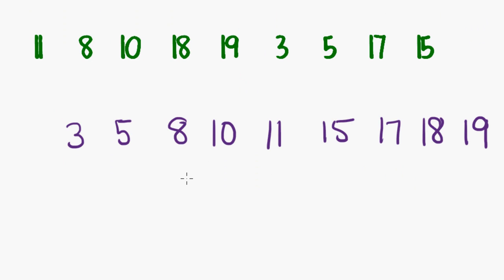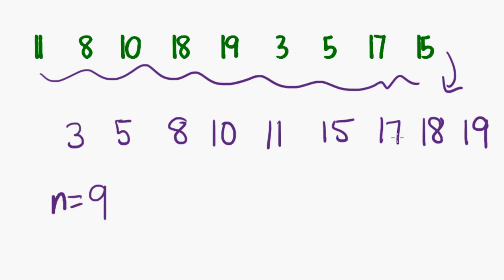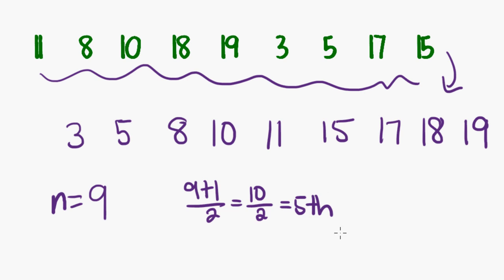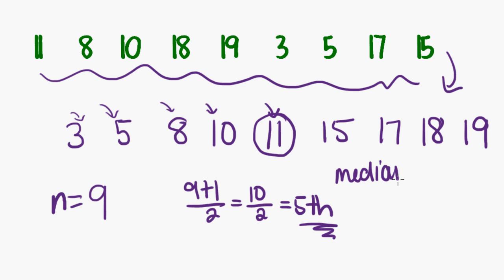Here's that other data set. First I need to know how many observations there are — the n. There are nine of them. This data has been put in order because you need it in order to work out the median. So there are nine observations, so I say 9 plus 1 over 2 is 10 over 2, which is 5. I'm looking for the fifth position into the data. Counting through: 1st, 2nd, 3rd, 4th, 5th — the fifth position is my median. So the median is 11.